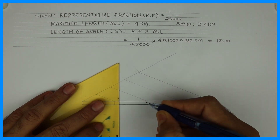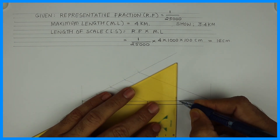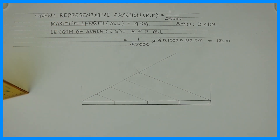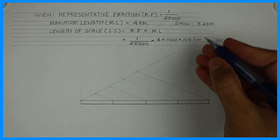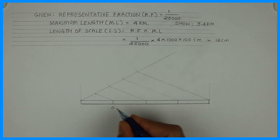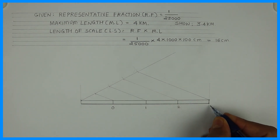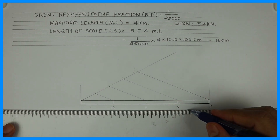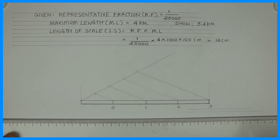After dividing into 4 parts, you draw a vertical line, so you will get 4 parts, 1 kilometer each. So this is 0, 1, 2, 3 — marked in kilometers.